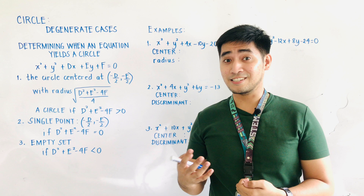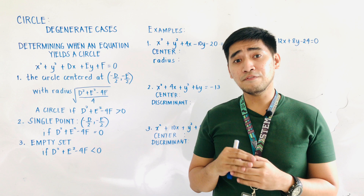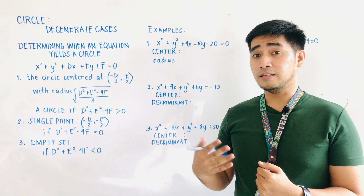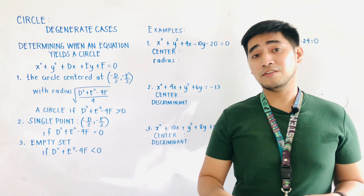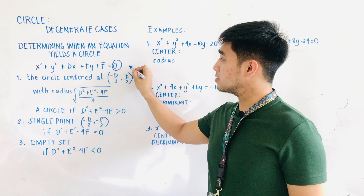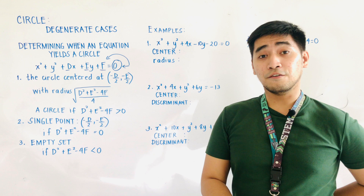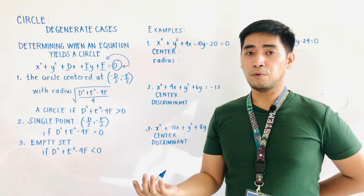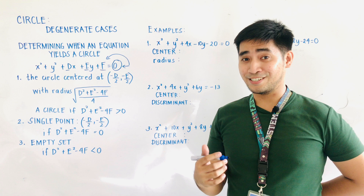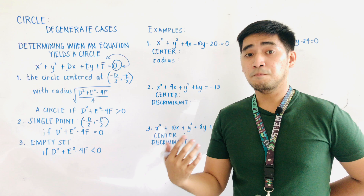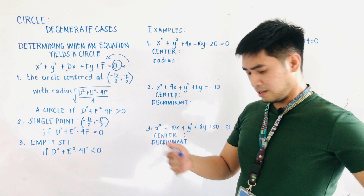So when do we know that an equation will yield a circle? If the given general equation of a circle will give us a graph of a circle. The general form of the circle is x squared plus y squared plus Dx plus Ey plus F equals zero. The right side is always equal to zero, and any constant is transferred to the left side to become the value of F. D and E are the coefficients of x and y, and they define the center of the circle.